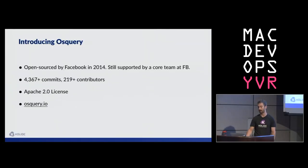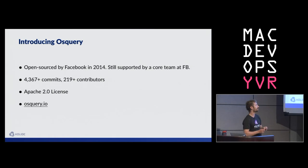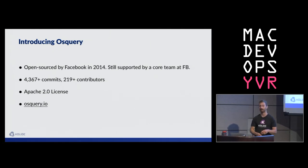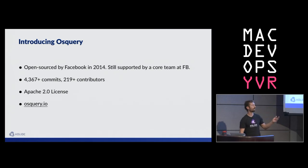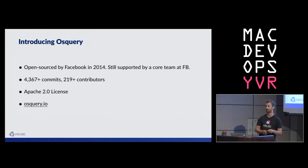Here's OS Query. How many folks in this room are using OS Query? OS Query was open sourced by Facebook in 2014. Facebook is still using it all over, and there's a core team at Facebook that maintains it. There are over 200 contributors, a pretty solid community, 4,000 commits — it's being really actively worked on and it's growing. We just had our first OS Query conference last week.